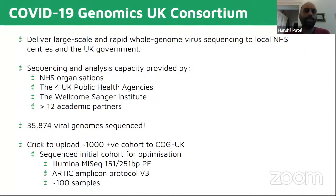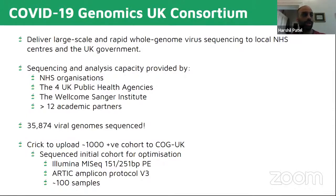The idea is that the Crick would like to submit those 1000 positive samples to COG UK, which is a nationwide initiative to track the evolution of the virus and also to track whether outbreaks are due to local transmission or coming from abroad, for example. And the way you do that is by looking at mutations in the virus.